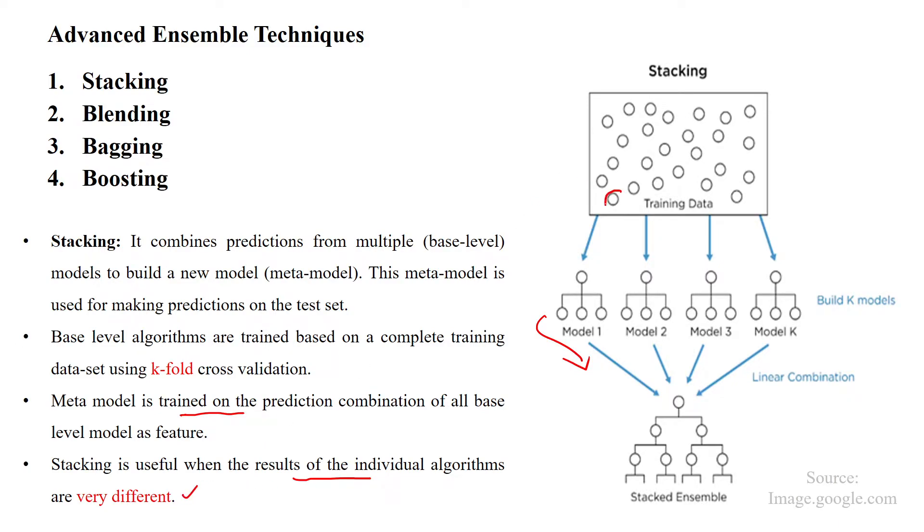For example, for this sample, this model can predict. So this actual output of this model, sample, I assume yes, right. But the model one can predict as no, model two predict as yes, model three can predict as yes, model K can predict as yes. You see, the model one is predicted as no, but different models are predicted as why.